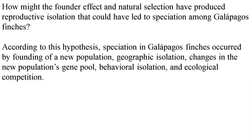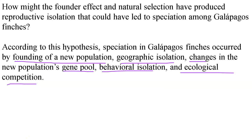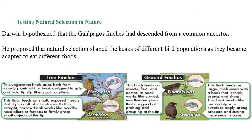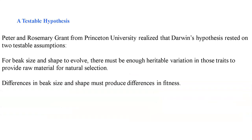Let's move on to the Galapagos finches. How might the founder effect and natural selection produce reproductive isolation? According to this hypothesis, speciation in Galapagos finches occurred through founding a new population, geographic isolation, changes in the gene pool, behavioral isolation, and ecological competition. The finches have different kinds of beaks — tools — that allow them to select certain types of food like berries and insects, and they compete based upon their beaks. Sometimes during certain situations, some beaks out-compete the others.